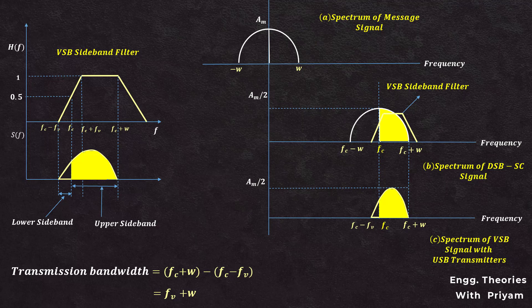With this filter we obtain the VSB modulated signal S(F), where the upper sideband lies between fc and fc+W, and the vestige of the lower sideband lies between fc−fv and fc. A portion of the upper sideband is missing due to the filtering operation, and this missing portion must be compensated. The requirement is that the vestige portion must compensate the missing spectral portion of the upper sideband. To achieve this, the VSB sideband filter must satisfy: H(F−fc) + H(F+fc) = 1, for |F| ≤ W.